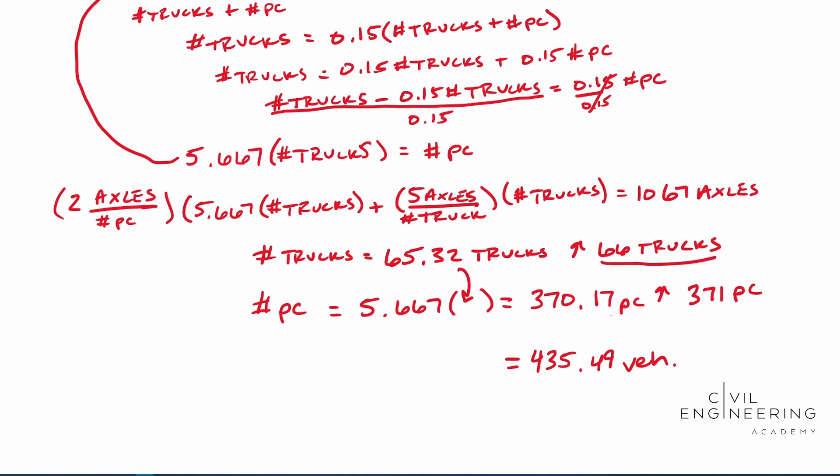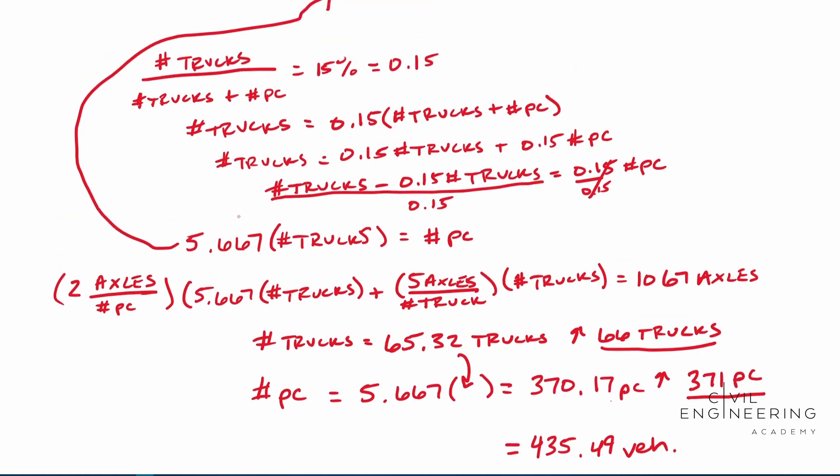This is, if we add the 65.32 plus the 370.17, this ends up being 435.49 vehicles. Again, let me reiterate, in reality you're going to bump these up. These are going to be 66 and 371, but it said about, so we're just going to keep rolling with the numbers that we got.